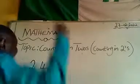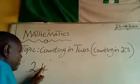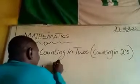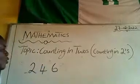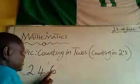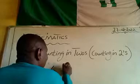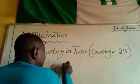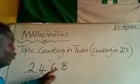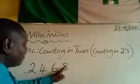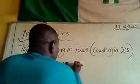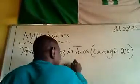When I add 2 to this 4, I will have 6. When I add 2 to this 6, I will have 8. When I add 2 to this 8, I will have 10.